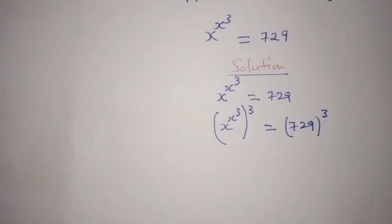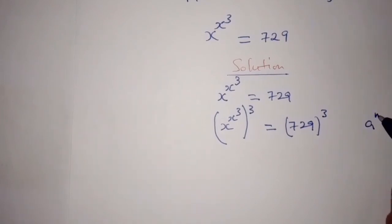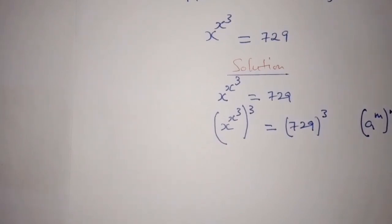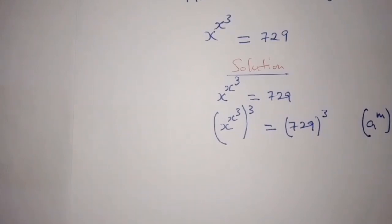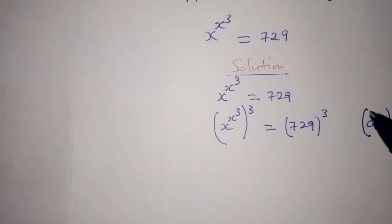Then we can solve this using the rule: a power m, in bracket raised to power n, is equal to a power m times n.